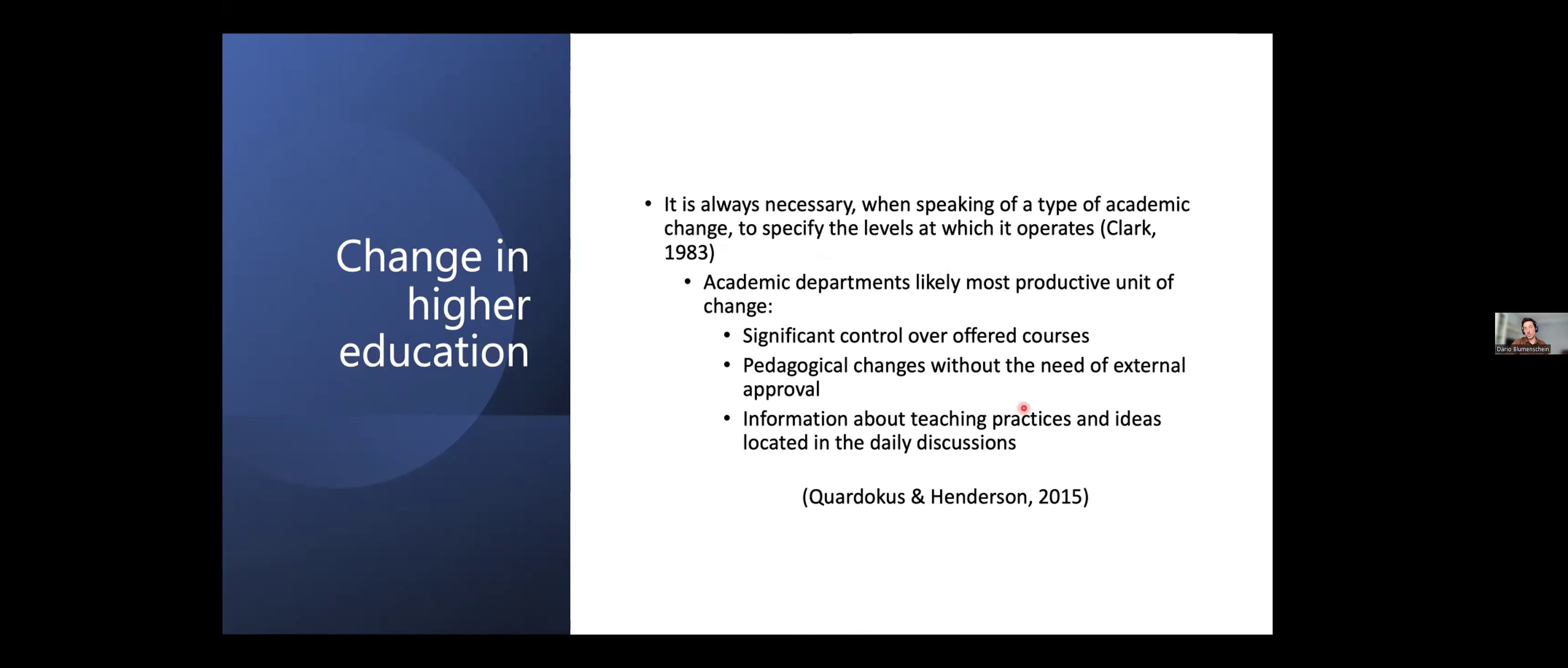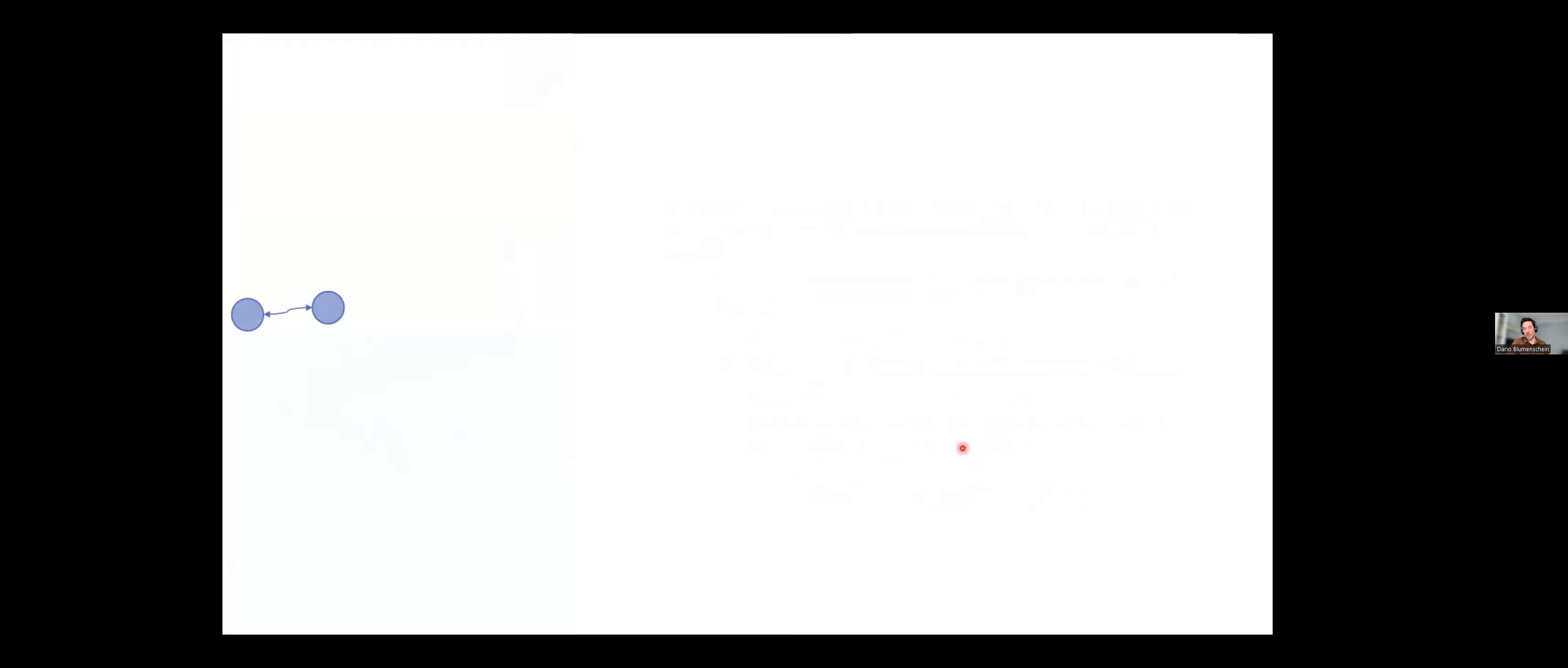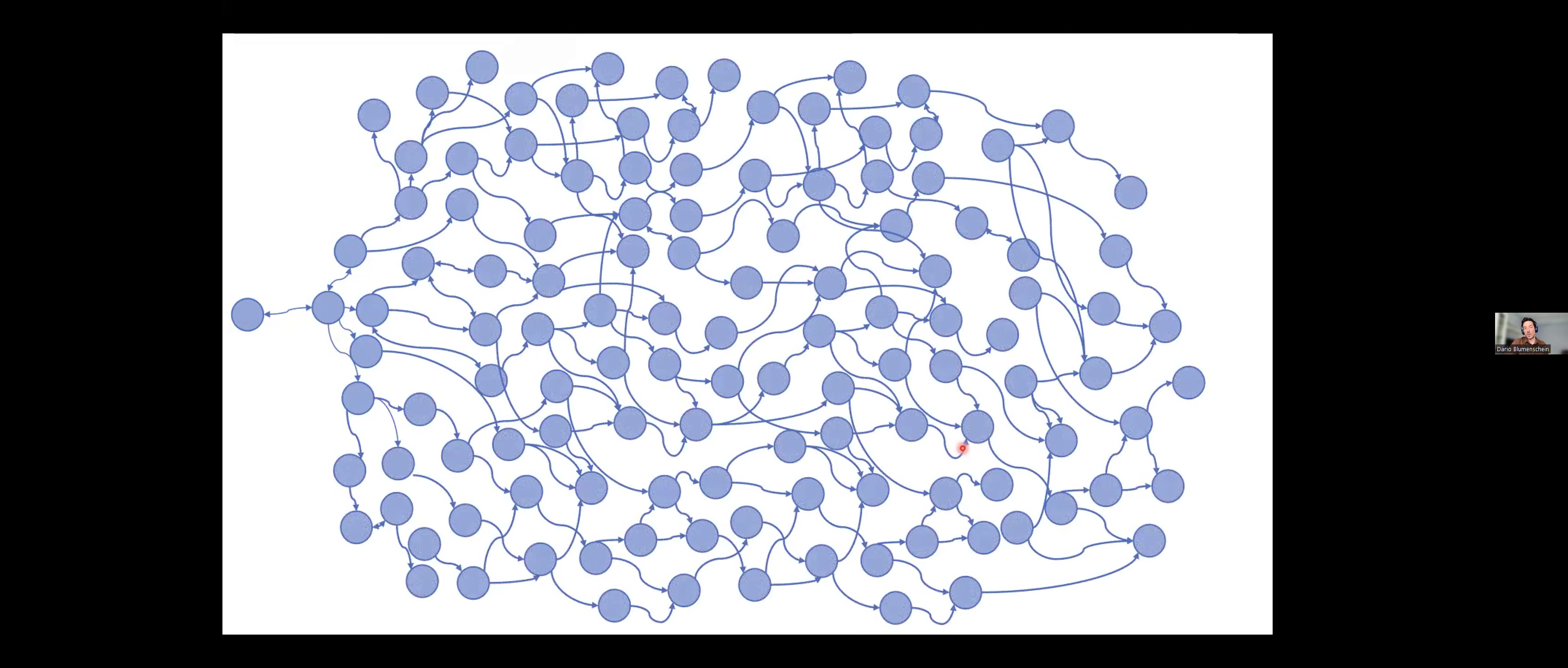You may say, yeah, there are still constraints within the department. So we only know what's happening in our own course. We don't know what's happening elsewhere. But nonetheless, it is a potential problem that is somewhat easier to solve than if it was a large-scale university-level problem. And also, maybe most important for what we study and how we study change is the reason that information about teaching practices and ideas are located in the daily discussions. And this basically brings us back to that initial little graph that you saw with the two people by the coffee machine. What is the role of these daily discussions that influence us?